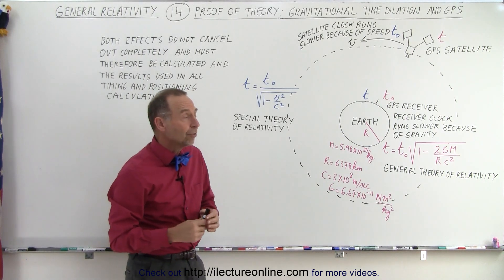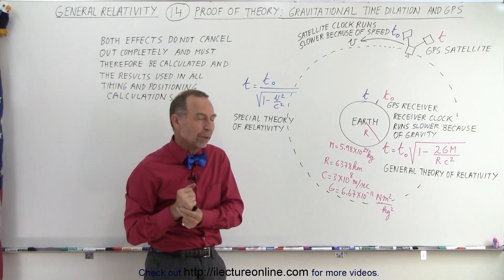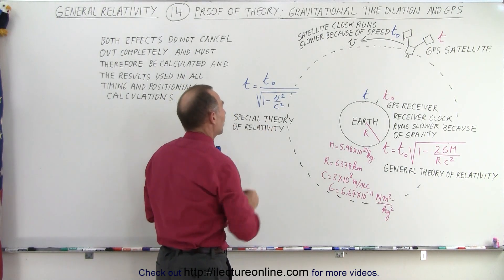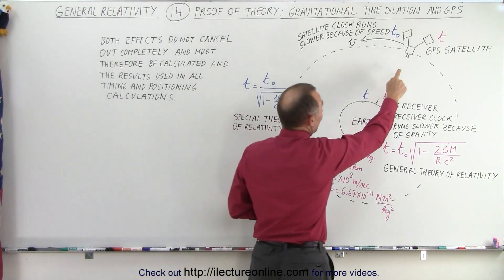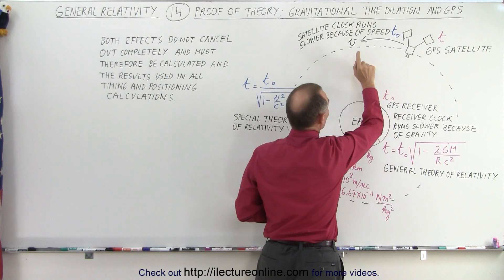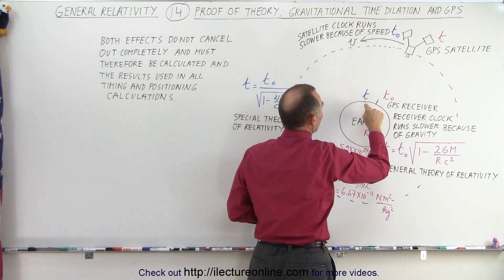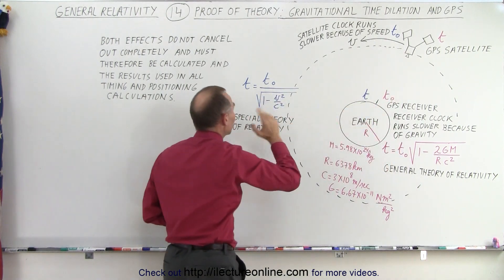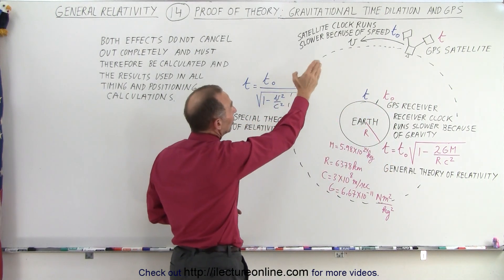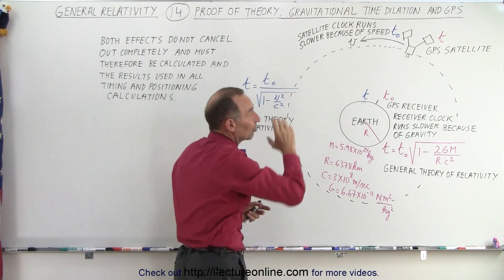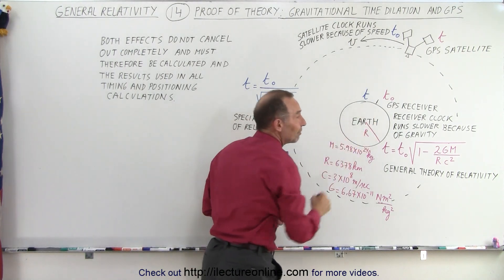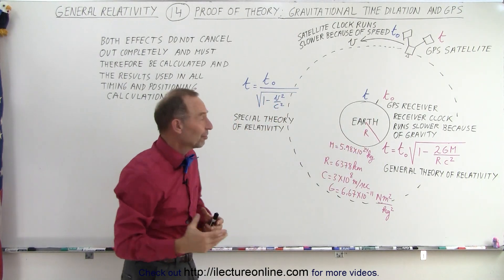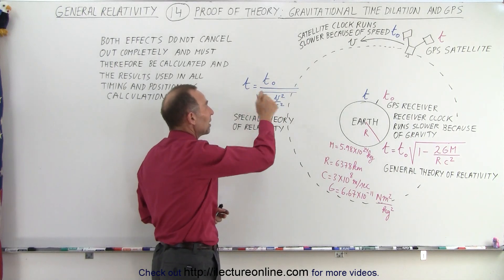So what happens? Well, there are two effects we need to deal with. The first effect is the special theory of relativity. Because the satellites travel at very high velocities, there's a slight difference in the time between the receiver on earth and the satellite up in space. It turns out that satellite clocks run slower because of the speed than the clock on the receiver. So we need to make an adjustment for that. And there's the equation that we use to make that adjustment. V is the velocity of the satellite, C is the speed of light, T sub zero is the time of the clock on the satellite, and T is the time of the clock on the receiver.